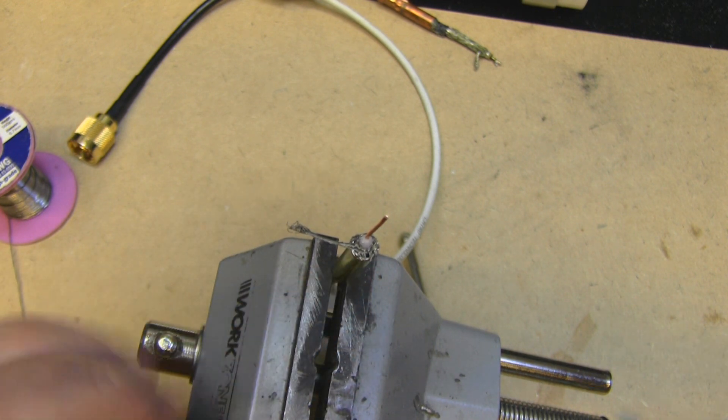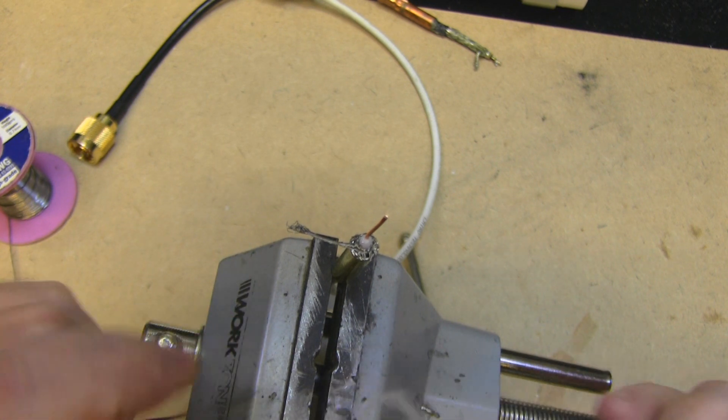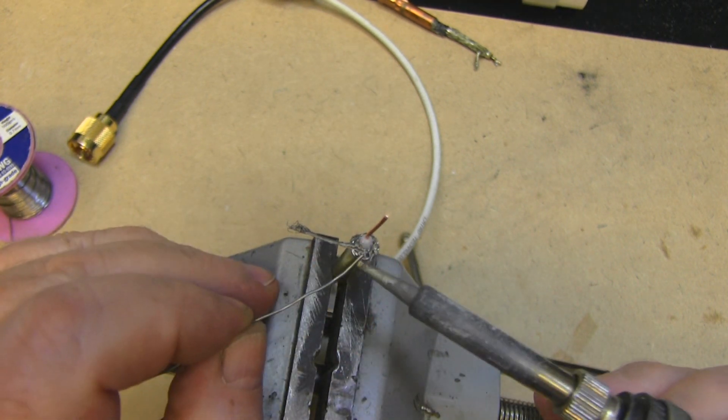Now that I've trimmed away any excess bits of that outer braid that we don't need, I'm just going to flood some solder into here so we've got a nice connection, and also tin these up as well while we're at it.